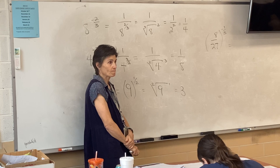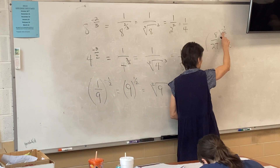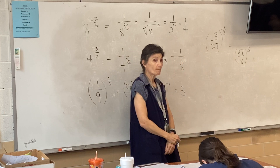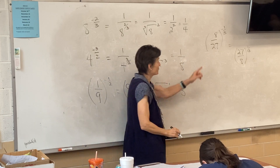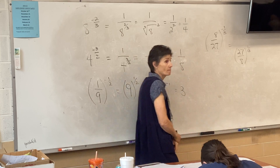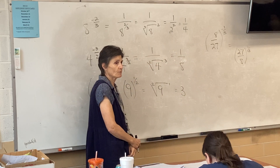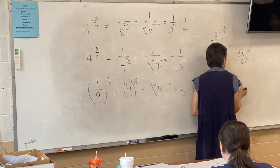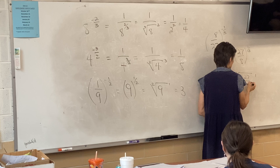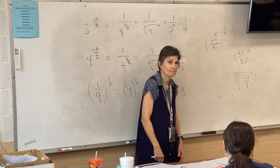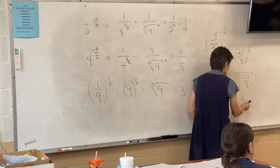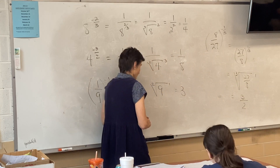What do we do first? Flip it because of the negative, so it's going to be 27 over eight to the one-third. Remember, when you flip it nothing happens to the exponent except it becomes positive. What does a one-third power mean? Radical — the cube root to the first power, and underneath you have 27 over eight. What's the cube root of 27? Three. The cube root of eight? Two. So the answer is three-halves.